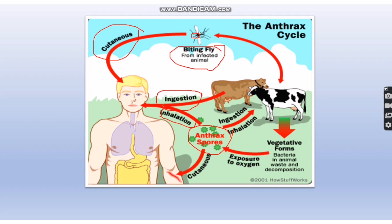Gastrointestinal anthrax is caused by ingestion — by consuming raw or undercooked meat containing anthrax spores. Inhalational anthrax occurs when anthrax spores present in the air are inhaled. These spores enter the respiratory tract, travel to the lungs, rest in the alveoli, and from there may enter the blood and cause anthrax.